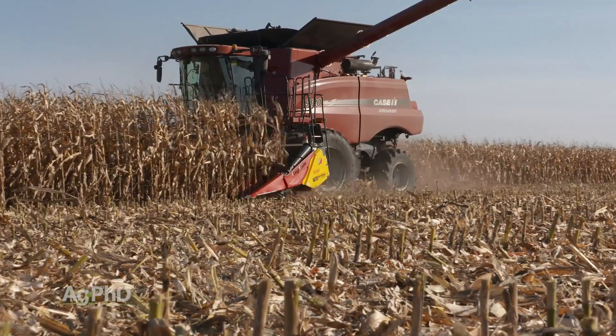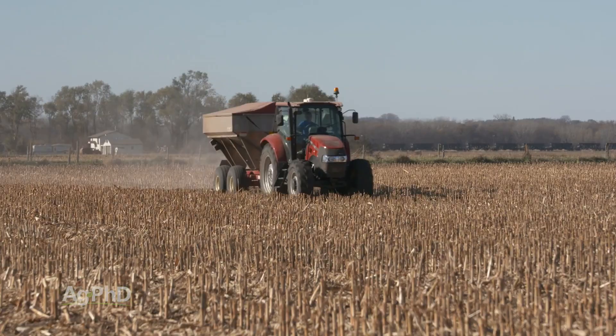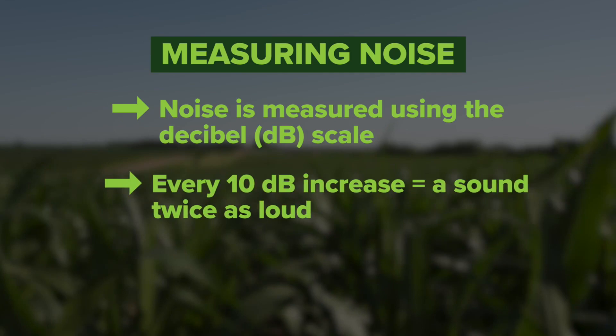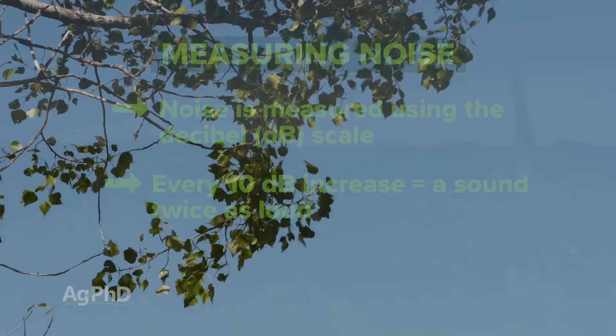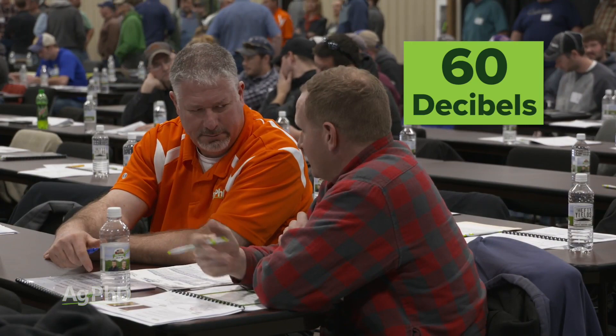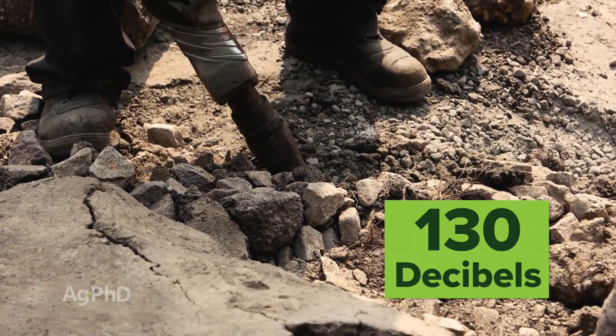Noise is everywhere on the farm, from a skid loader cleaning out livestock pens to a tractor in the field. You understand it's loud, but how loud is too loud? Noise is quantified by the decibel scale — every 10-decibel increase is twice as loud. Leaves rustling in a breeze are about 40 decibels; a coffee shop conversation is about 60 decibels. Working around equipment is another story: a jackhammer makes noise at 130 decibels, a shotgun can be 150 decibels or more, and common shop tools like an impact wrench or circular saw can make noise at greater than 100 decibels.